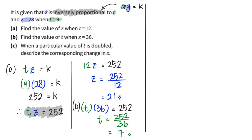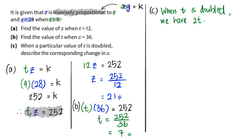Now let's move on to part c. When a particular value of t is doubled — this is important — that means t becomes 2 times t. When we have 2 times t there will be a new value of z. We know that z is always 252 divided by t, and in this case t becomes 2t.